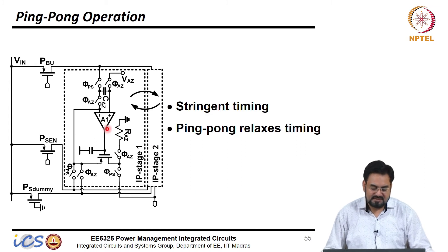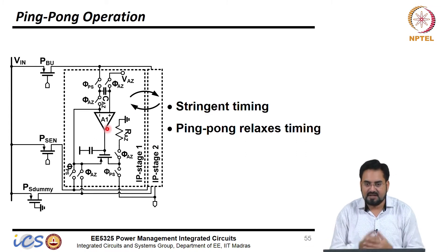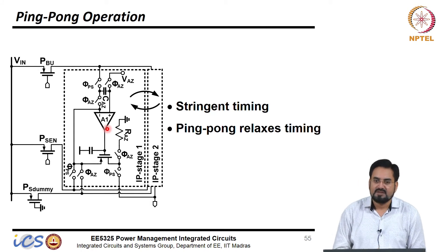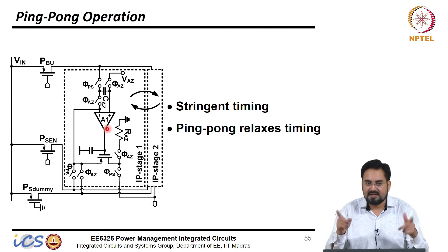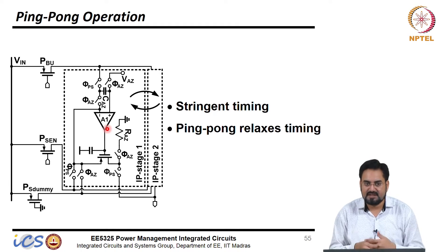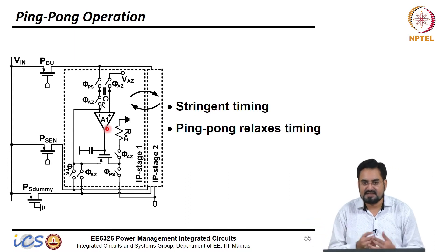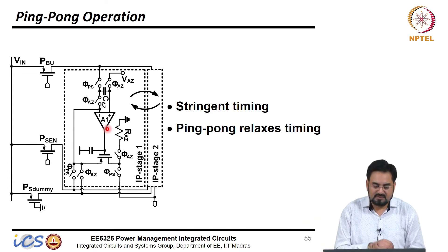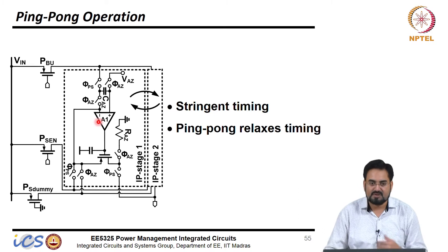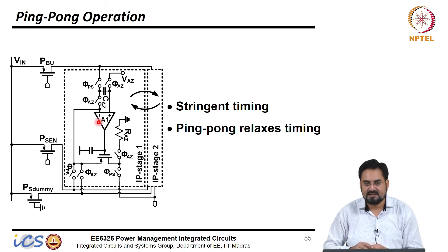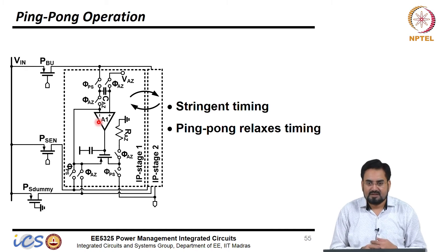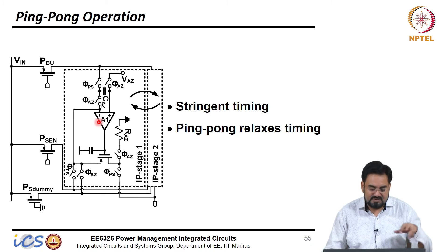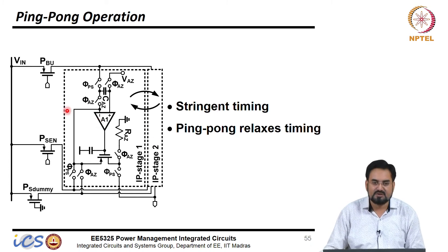The problem here is that you have to do everything within a very short time. For one switching period you have to do everything, and in the next cycle you repeat — cycle by cycle current sensing. This means we hardly get any time to settle the output. It is quite possible that your output may not settle before the next PWM cycle comes.